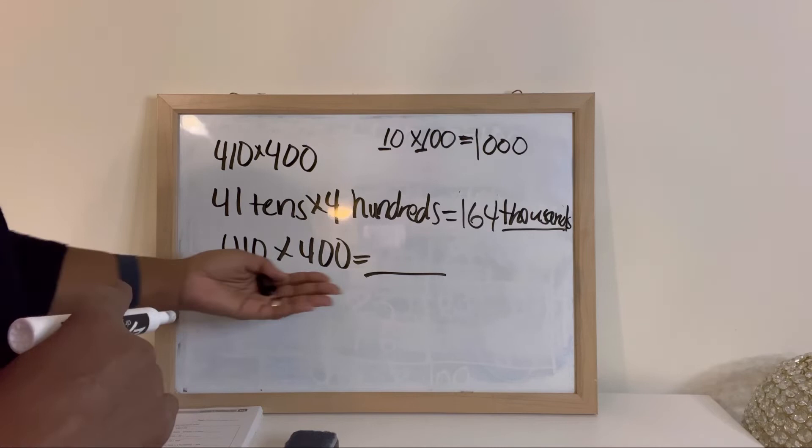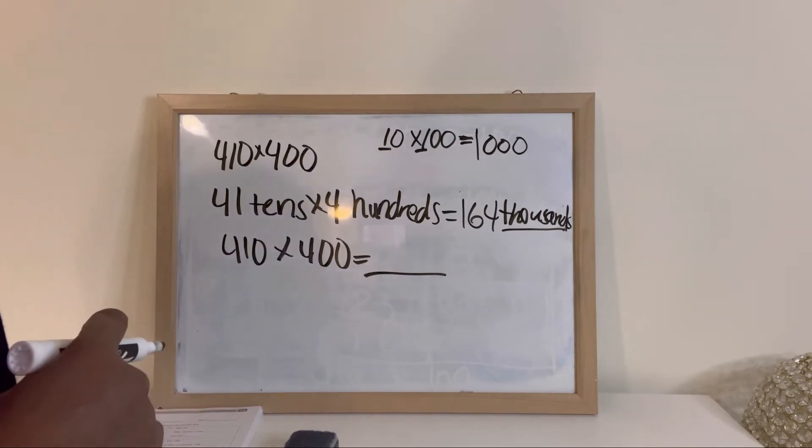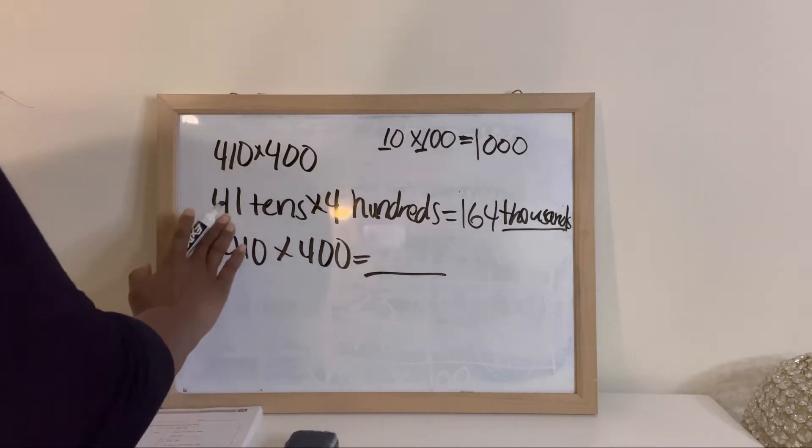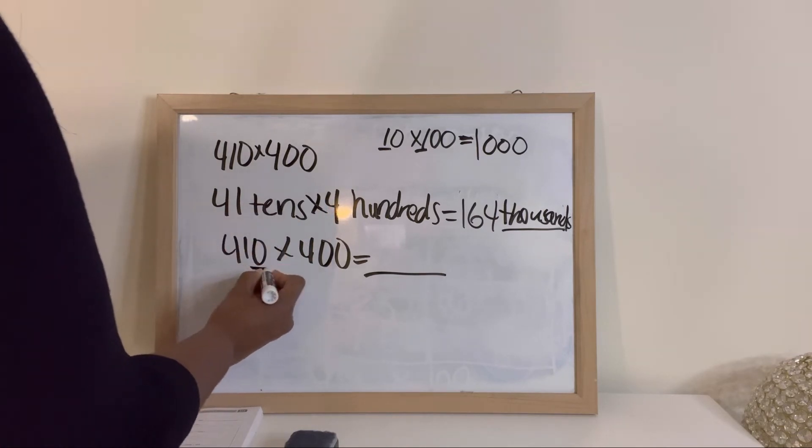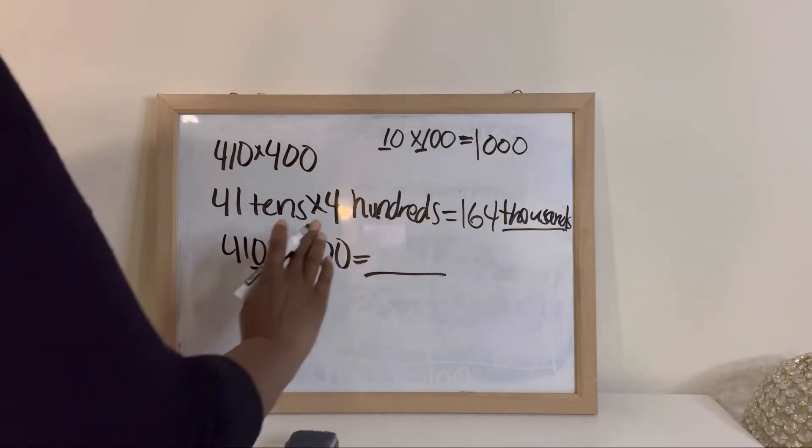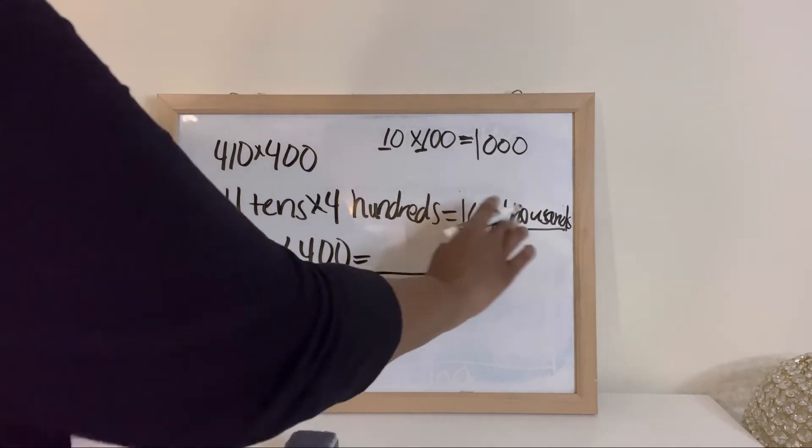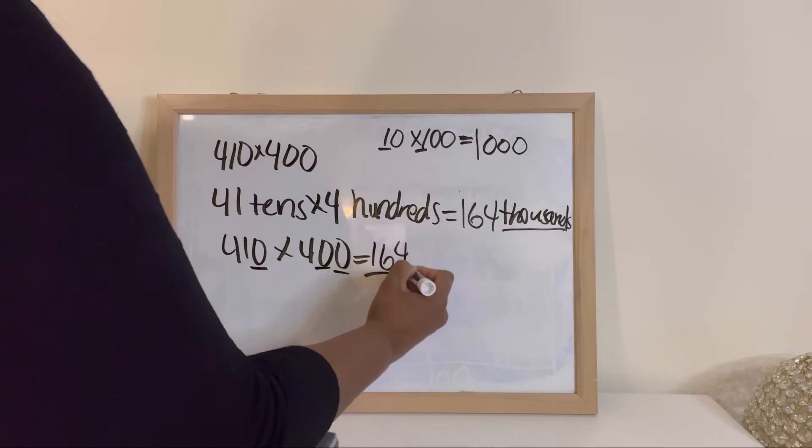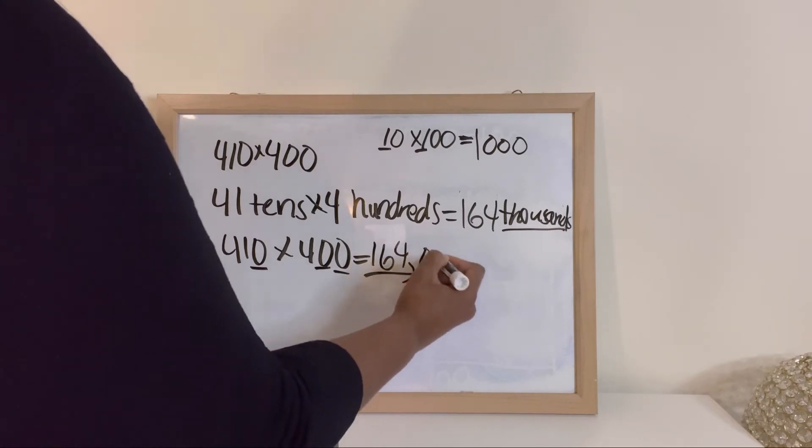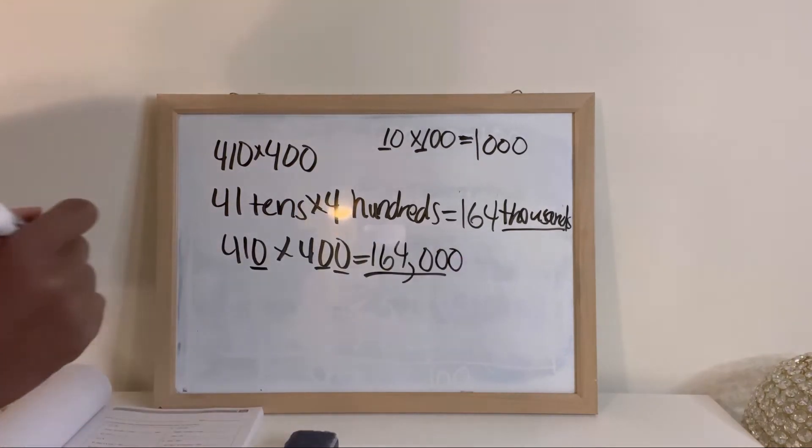Now, how does that look in standard form? So again, notice when we said 41 tens, we showed that with one zero. Notice when we said 4 hundreds, we showed that with two zeros. Now when we say 164 thousands, we're going to show that with three zeros.